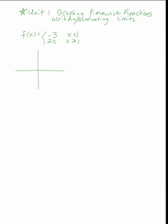The trick to piecewise functions is that you want to take your boundary point of 1 and plug that into both equations. Starting with the bottom one: if I plug in 1 for x, I get an output of 2. In the bottom expression of f of x, I'm only allowed to plug in values where x is greater than or equal to 1, so plugging in 1 is allowed. That means 1 comma 2 is a point on the graph.